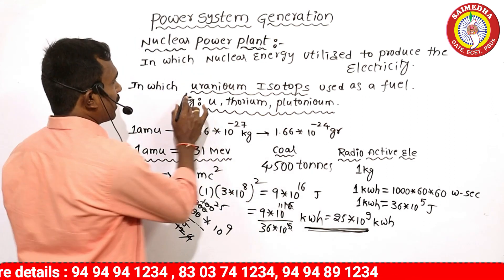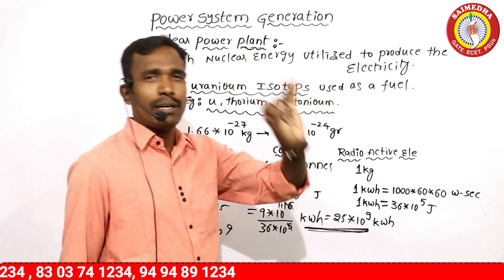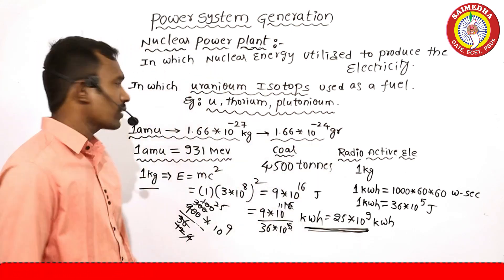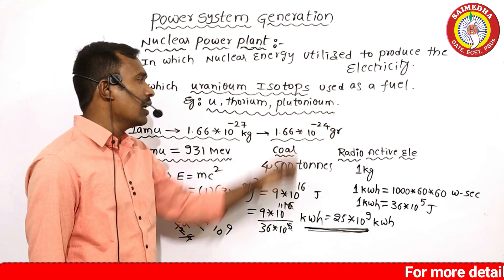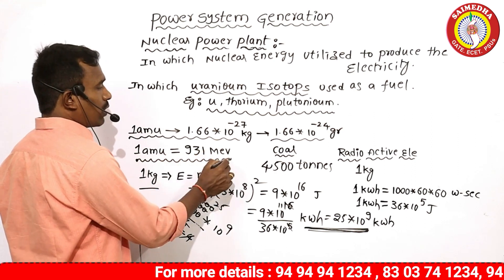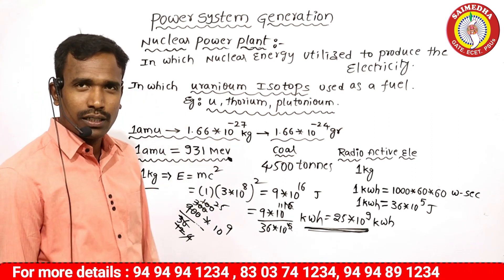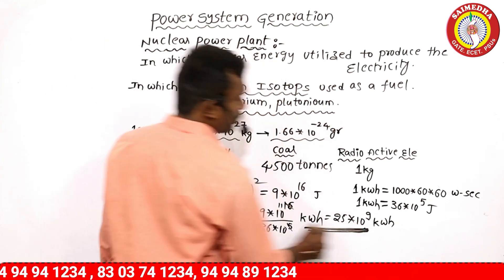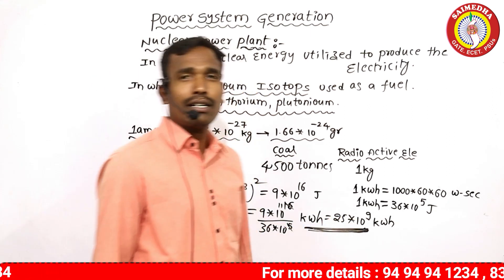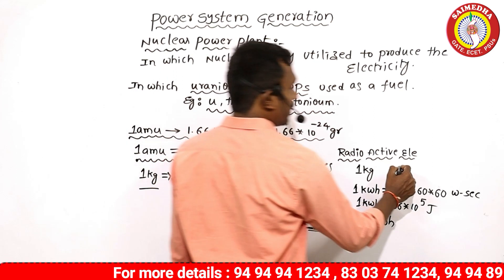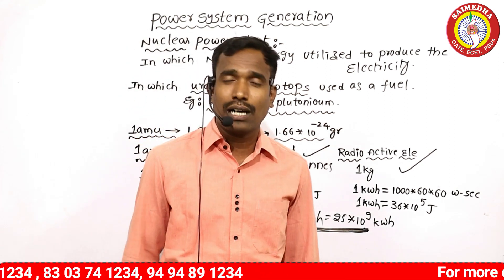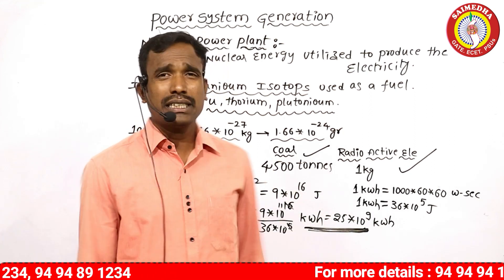So why do we use uranium isotopes as fuel? Uranium, thorium, and plutonium — their weight in atomic mass units: one AMU equals 1.66 × 10⁻²⁷ kg or 1.66 × 10⁻²⁴ grams. One atomic mass unit produces that much energy. 1 kg of uranium produces 9 × 10¹⁶ joules, or 25 × 10⁹ kilowatt hours — the same as 4,500 tons of high-grade coal.